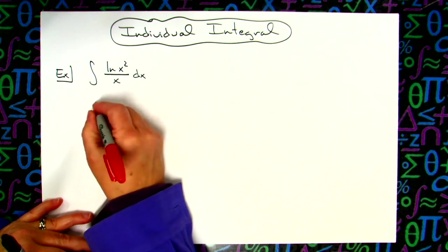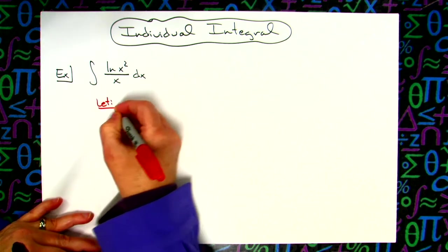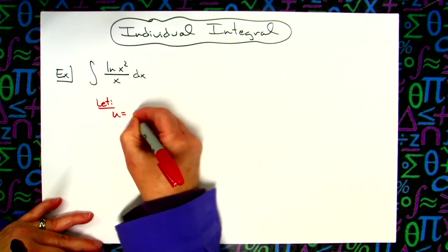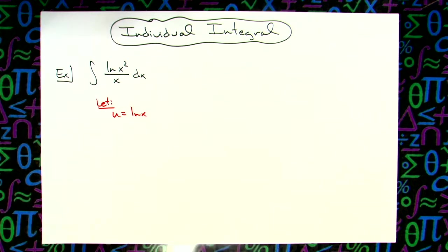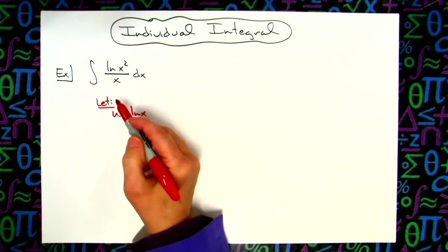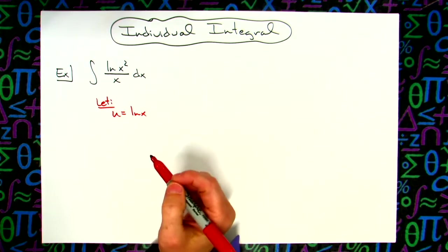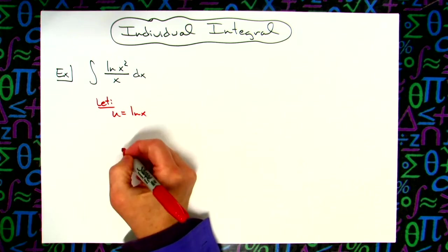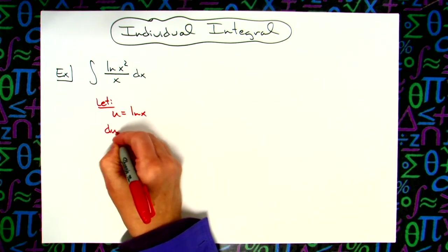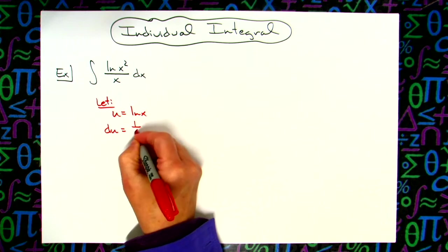First thing we're going to do is choose our u. So we are going to let our u be the natural log of x. Anytime there's that natural log of x in there and then there's another plain x, this really works really nice. We're going to take the derivative of both sides. We'll have du is equal to 1 over x dx.